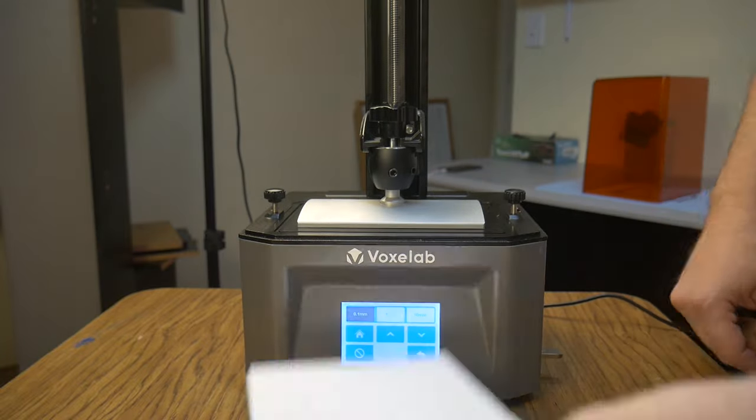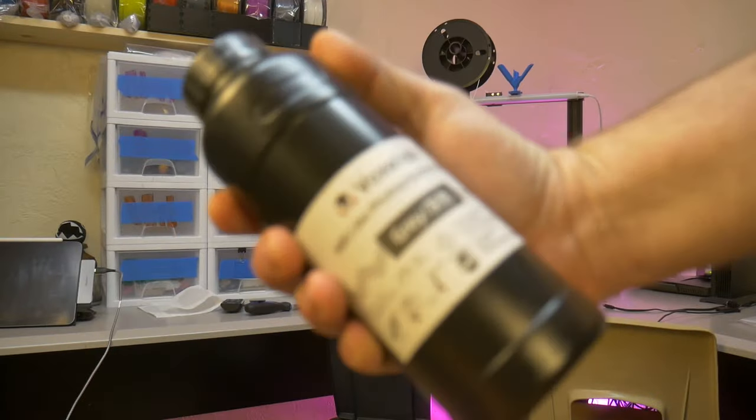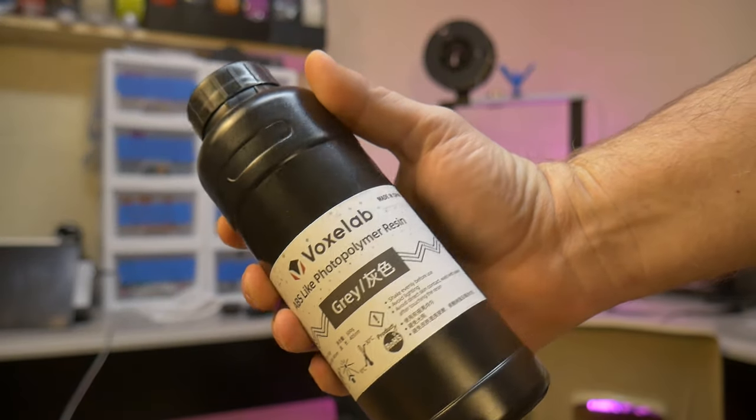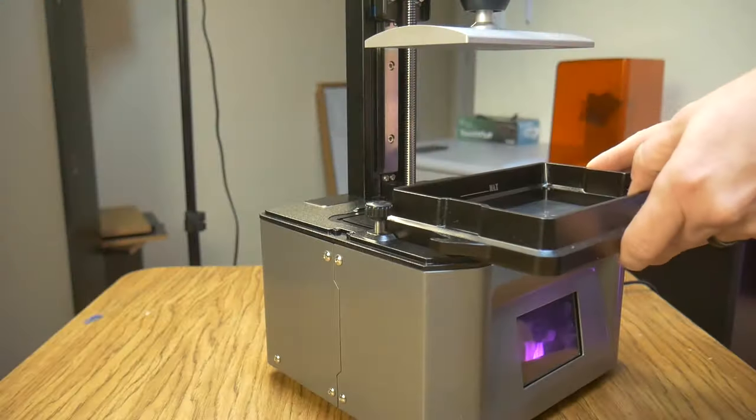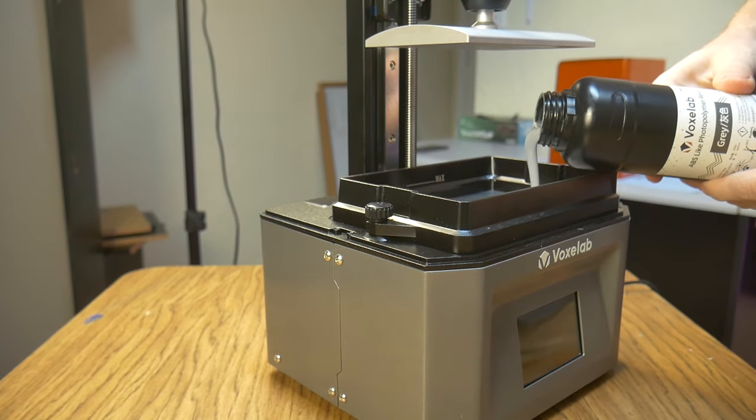It is found in the quick start guide and is well written and very easy to follow. I decided to go with the Voxelab gray ABS-like resin for this print. I figure what better brand of resin to use than the manufacturer's own resin. So I'm hoping to get really good results with this Voxelab resin.